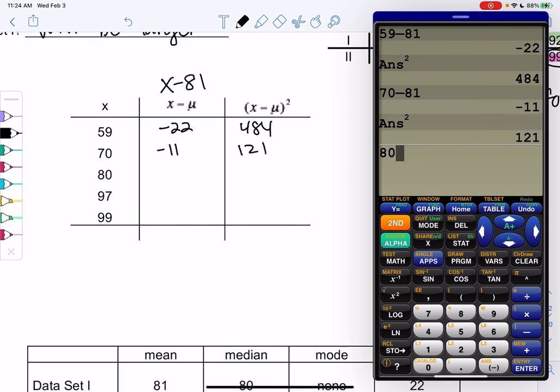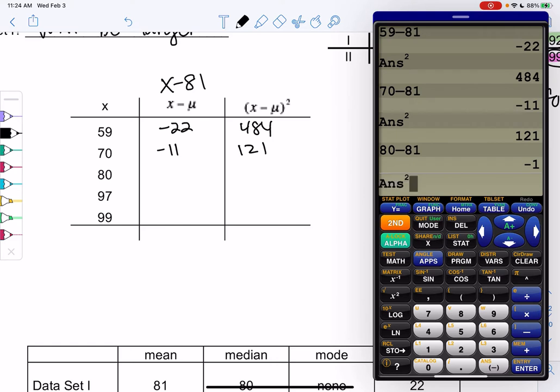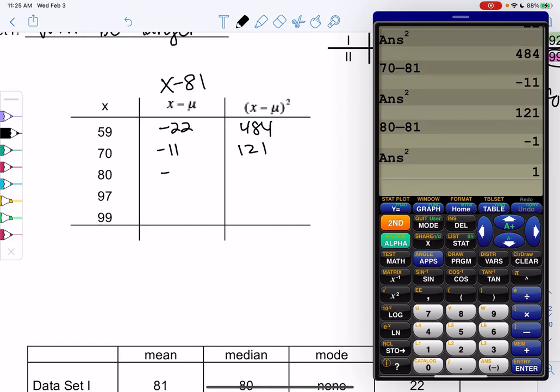80 minus 81 is just 1. Square it, it's just 1. Sorry, it's negative 1, but squared, it's positive 1. So all the squared numbers should be positive.